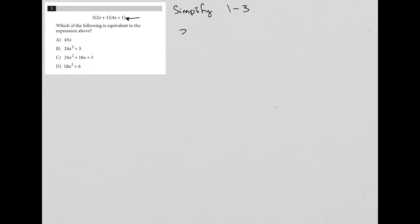So if I simplify this, let's take this 3, 2x plus 1, and 4x plus 1. I first of all would want to FOIL this product of binomials here.